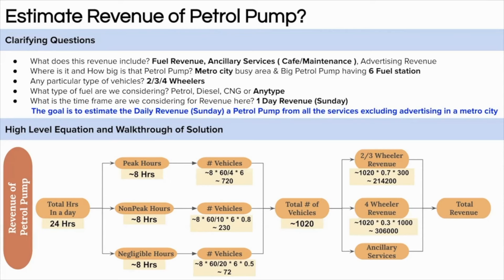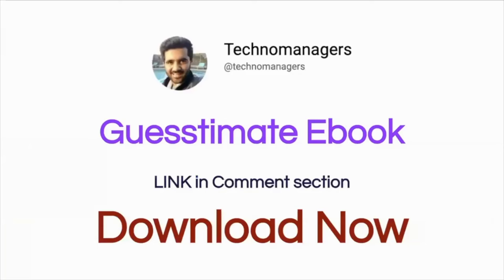A lot of people ask how we derive the 10% figure — these are estimates based on observations from a small sample extrapolated to a larger set. Interviewers are more focused on the approach than on these specific numbers. Adding all revenue sources gives a total estimated daily revenue of approximately 5.4 lakh rupees. Keep learning and keep watching.